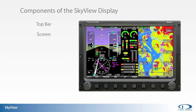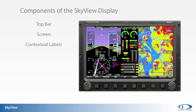Labels along the bottom of the screen that correspond with the underlying joystick knobs and buttons are contextual. The function indicated corresponds to what is displayed on the main screen or what menu selection has been chosen. The main menu provides the pilot a gateway to SkyView's controls and functions.